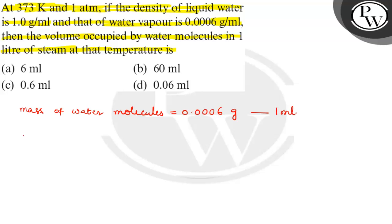We need to count the mass of water molecules. Mass of water molecules in 1 liter, in 1 liter of steam, is equal to 0.0006 into 1000, that is equal to 0.6 grams.